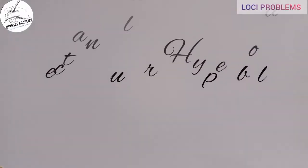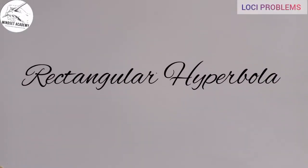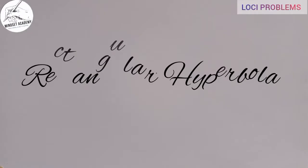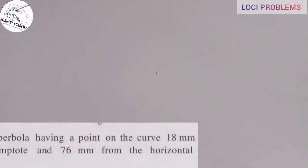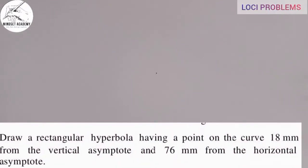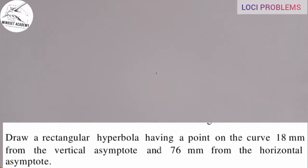Welcome to my channel. In this video we want to construct a hyperbola using the rectangular method. The question says: draw a rectangular hyperbola having a point on the curve 80 millimeters from the vertical asymptote and 76 millimeters from the horizontal asymptote.